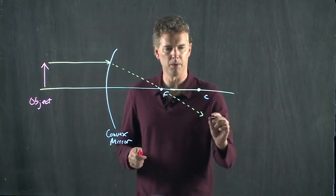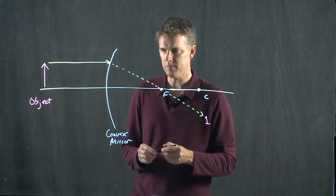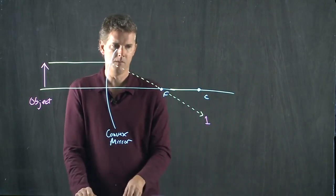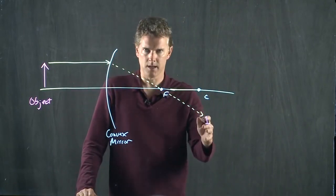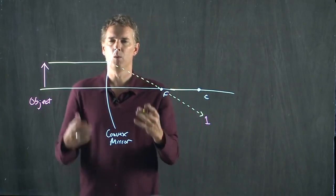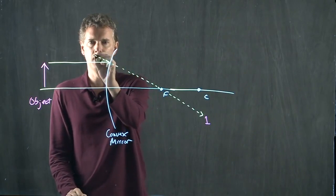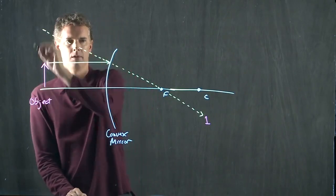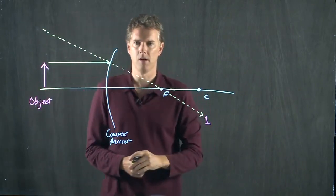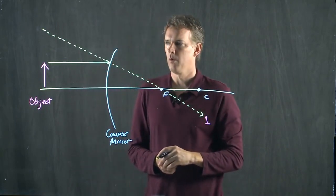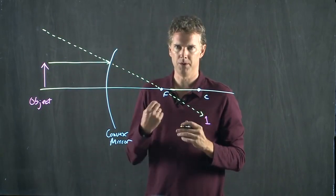If it's a dashed line, what that means is when you look at this mirror, it's going to look like it came from there. What about rule number two?